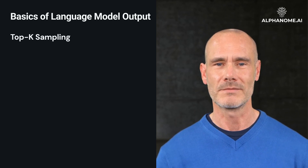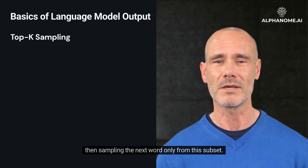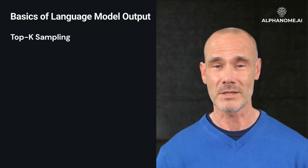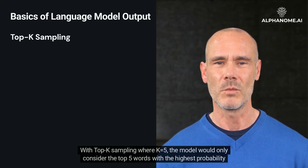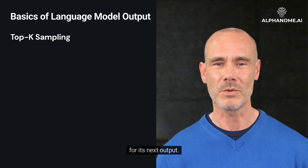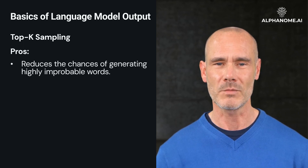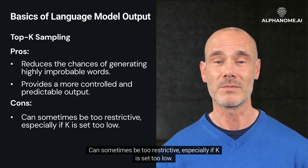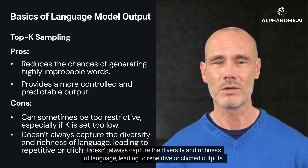Top K sampling involves selecting the top K most likely words from the probability distribution and then sampling the next word only from this subset. For example, imagine a scenario where an LLM is prompted with 'The capital of France is.' The model might assign the highest probabilities to words like Paris, A, known, etc. With Top K sampling where K equals 5, the model would only consider the top 5 words with the highest probability for its next output. Pros: reduces the chances of generating highly improbable words and provides a more controlled and predictable output. Cons: can sometimes be too restrictive, especially if K is set too low, and doesn't always capture the diversity and richness of language, leading to repetitive or clichéd outputs.